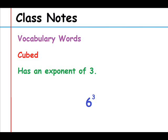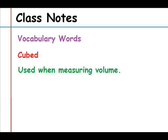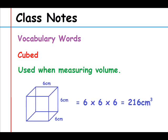The next vocabulary word is cubed, which means a number has an exponent of 3 — for example, 6 cubed means 6 with an exponent of 3. Cubed is also used when measuring volume. If we have a cube with its length, width, and height each measuring 6 centimeters, to find the volume you take 6 times 6 times 6 and get 216 centimeters cubed.